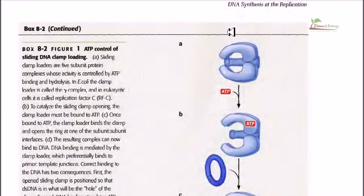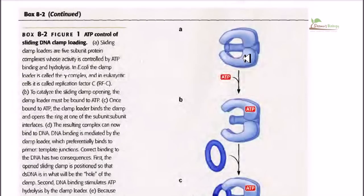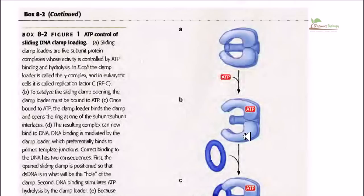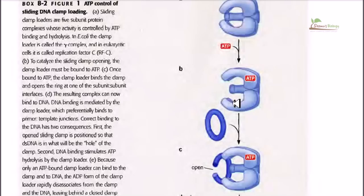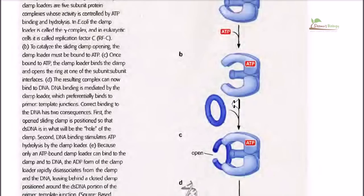Now looking at the structure of the clamp loader protein: loading the clamp onto the DNA strand requires energy input, and the energy currency in biological systems is ATP. We need ATP to carry out this job. The clamp loader has a central region and two hand-like structures on the outside. Initially these are closed, but after the addition of an ATP molecule it becomes activated, and as a result of this activation the head and hand regions open up, ready to load the beta clamp onto the DNA strand.